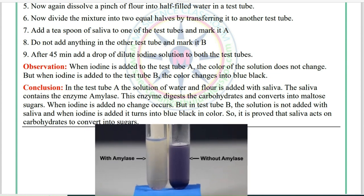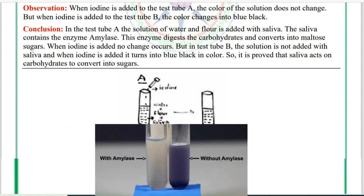Conclusion: In test tube A, the water and flour solution was added with saliva. Saliva contains the enzyme amylase, which digests carbohydrates and converts them into maltose sugars — so when iodine is added, no color change occurs. In test tube B, no saliva was added, so iodine turns the solution blue-black. This proves that saliva acts on carbohydrates to convert them into sugars.